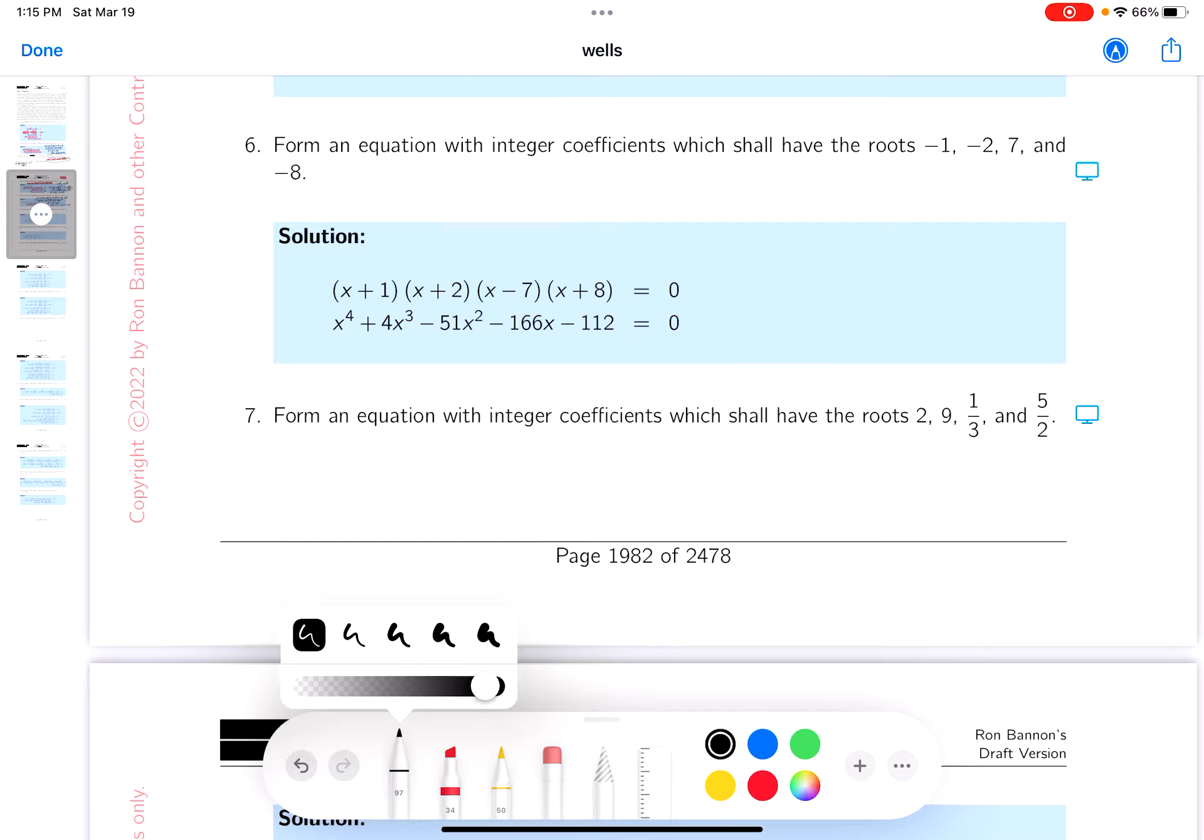And again, if minus 1 is a root, x plus 1 is a factor. If minus 2 is a root, x plus 2 is a factor. If 7 is a root, x minus 7 is a factor. And if minus 8 is a root, x plus 8 is a factor, and this is equal to 0.